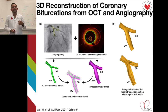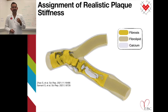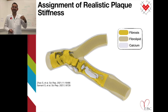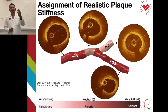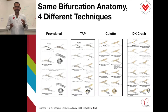Here is a close-up of our methods: the reconstruction of the lumen, meshing of the lumen, and also assignment of realistic plaque stiffness. We identify by OCT the configuration and distribution of different plaque compositions in the 3D reconstructed wall, and then we translate this to patient-specific plaque stiffness. You can see different OCT frames along the reconstructed wall and how they correlate with patient-specific wall stiffness. Each anatomy is then stented computationally with four different techniques: provisional, TAP, culotte, and DK crush.